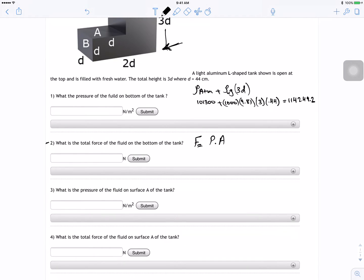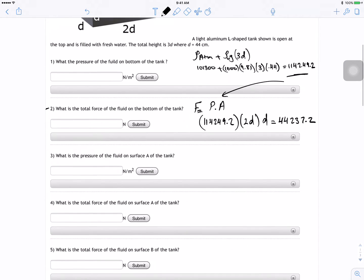So let's do that. The answer you get from here, you're just going to plug it in here. It's 114249.2 times the area, which is 2d times d. Now for me, the answer for this guy was 44,237.2 Newtons.